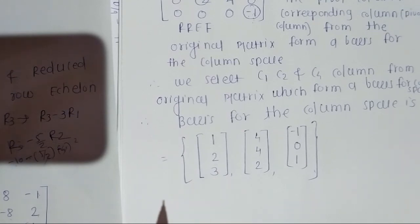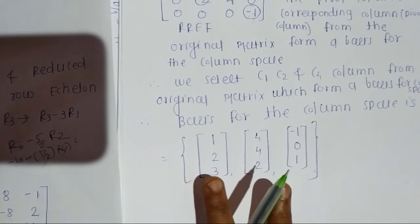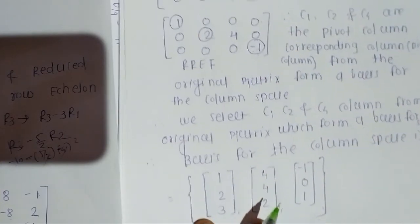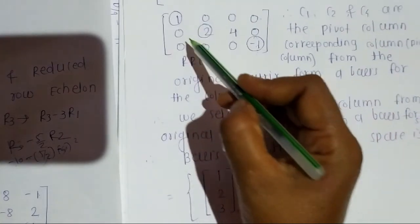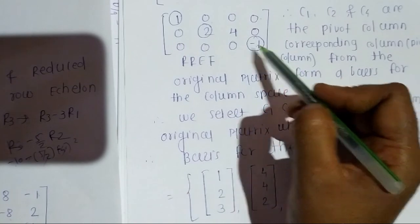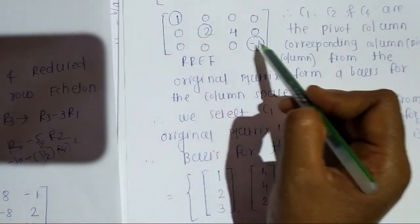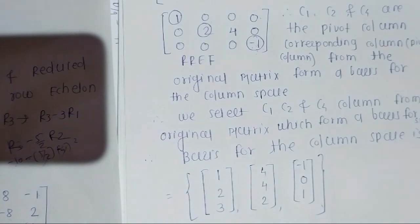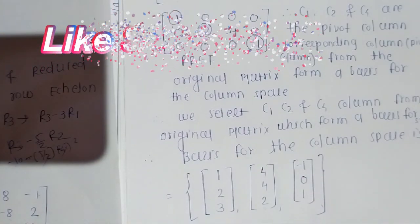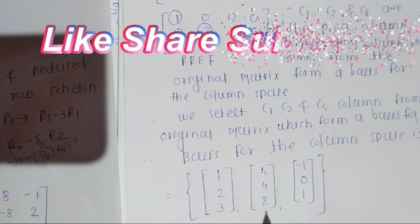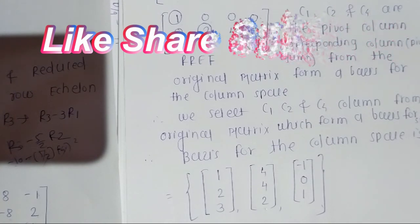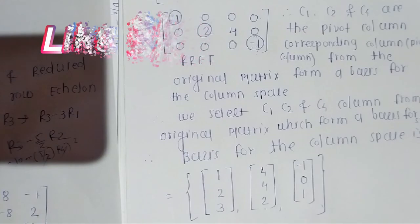The most important point after reducing to RREF is to identify the pivot columns — the columns where the first non-zero (diagonal) entry is present. Those columns from the original matrix represent the basis for the column space. In the next video, we will see how to find the null space, nullity, or the basis for a null space.